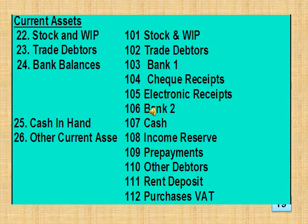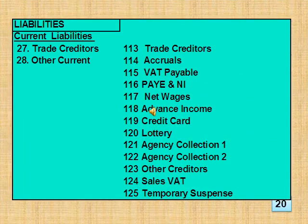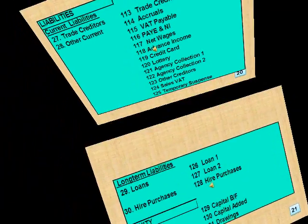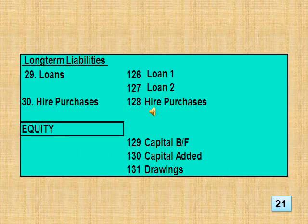This slide has the subclassification of current liabilities, the two group accounts, plus the individual accounts in each group. This slide has the subclassification of long-term liabilities, the two group accounts, plus the individual accounts in each group. In addition, it has the equity classification, plus the three individual accounts.